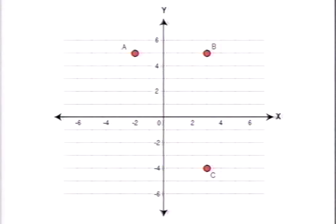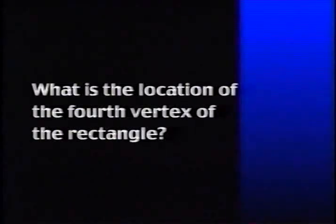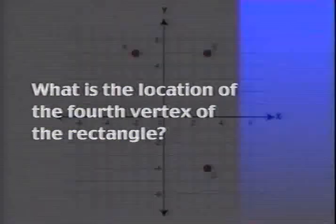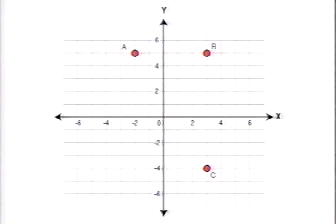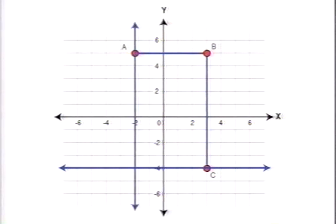Let's take a look at a sample question to see how its answer is marked on a coordinate grid. Three vertices of a rectangle are shown in this graph. What is the location of the fourth vertex of the rectangle? Knowing certain properties of a rectangle and seeing three of its vertices, you should be able to determine the location of the fourth vertex.